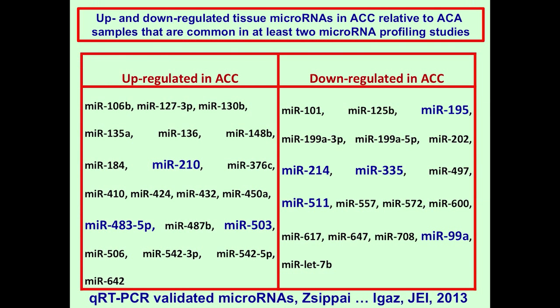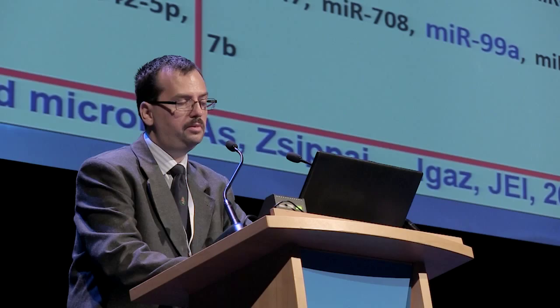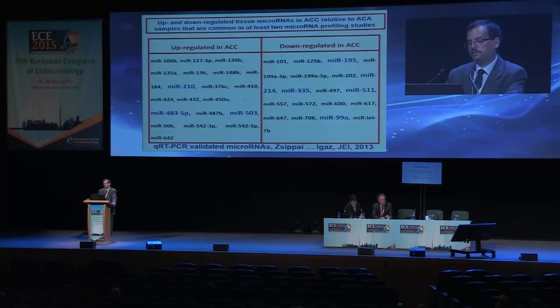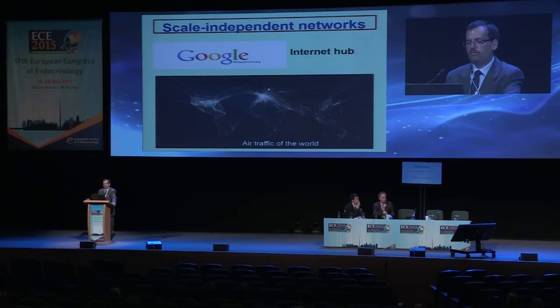Altogether, there are relatively few microRNAs — highlighted in blue — that have been confirmed in at least two independent studies and validated. There are great differences between the platforms used, and this warrants larger-scale studies on unified platforms, with the hope of finding generally characteristic biomarkers for tissue adrenocortical cancer.